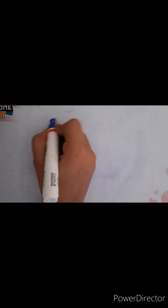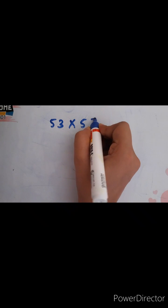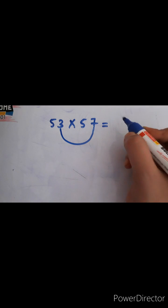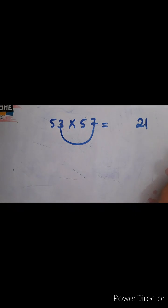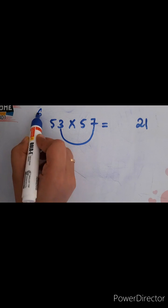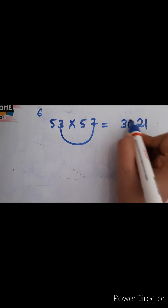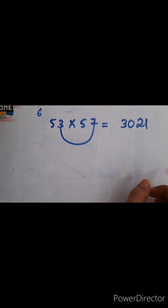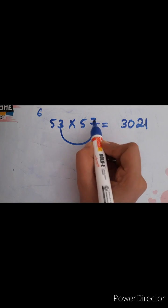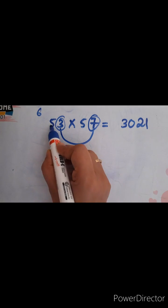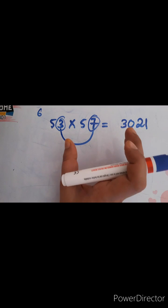Next: 53 into 57. Multiply the units digits — 7 times 3 is 21. Write 21. The tens digit is 5; the next number after 5 is 6. So 6 fives are 30. Write 30. The answer is 3021. After practicing many times you will do this very fast. Note: this is only applicable when the units digits add up to 10 — here 7 plus 3 equals 10 — and the tens digits are the same.